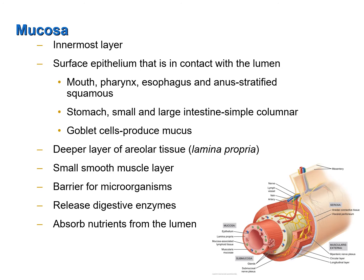There is also a small smooth muscle layer which contracts and throws the lining of the mucosa into folds. The mucosa serves as a barrier for microorganisms in the lumen, preventing them from accessing deeper tissues of the GI tract as well as the blood. The mucosa is also responsible for the release of numerous digestive enzymes to support digestion, and participates in the absorption of nutrients from the lumen and eventually into the bloodstream.